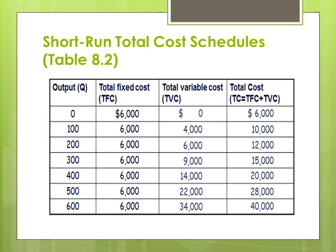You can see that our total output is increasing from zero onward. Our total fixed cost is fixed at 6,000. And total variable cost varies — since total fixed cost is a one-time expenditure it remains fixed. Total cost equals total fixed cost plus total variable cost, and we get our total cost by adding total fixed cost and total variable cost.